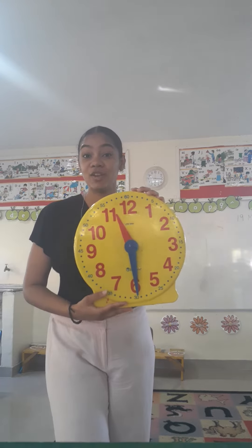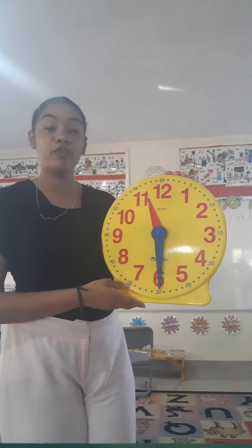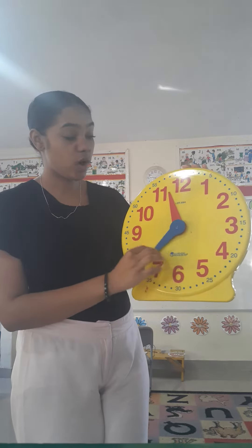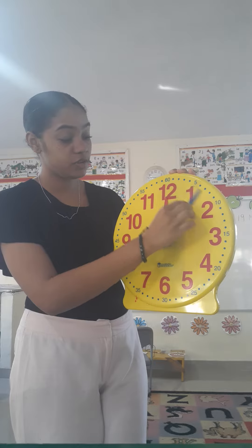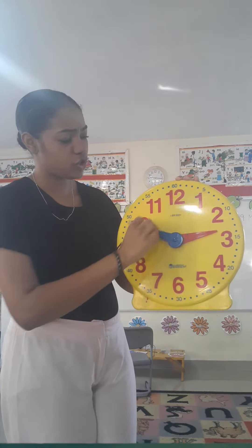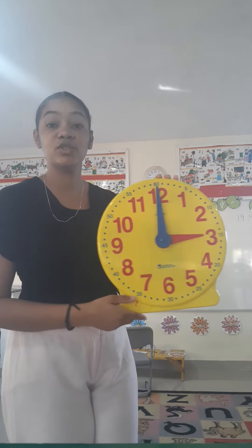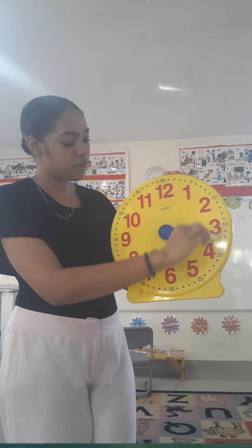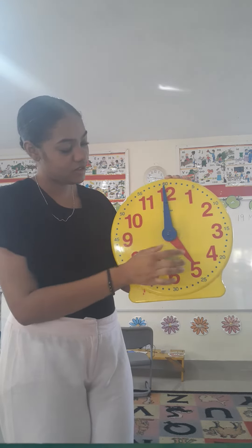I'm holding a big clock in my hand and I'm going to show you a few o'clock times. If I take the big one — remember — and put that on 12, that means it's o'clock. So if the big one is on 12 and the small one is on three, that means it's three o'clock.